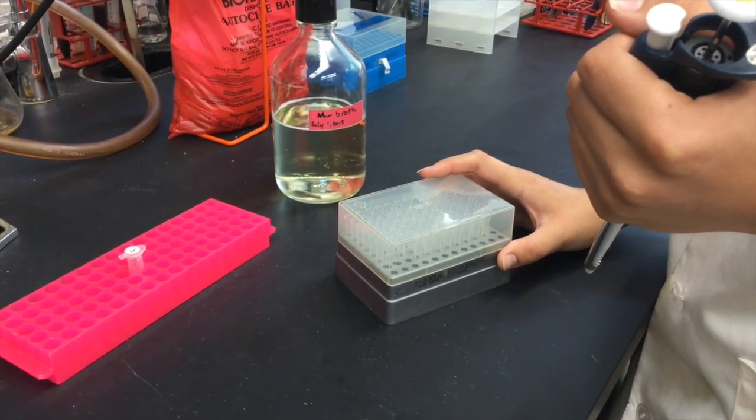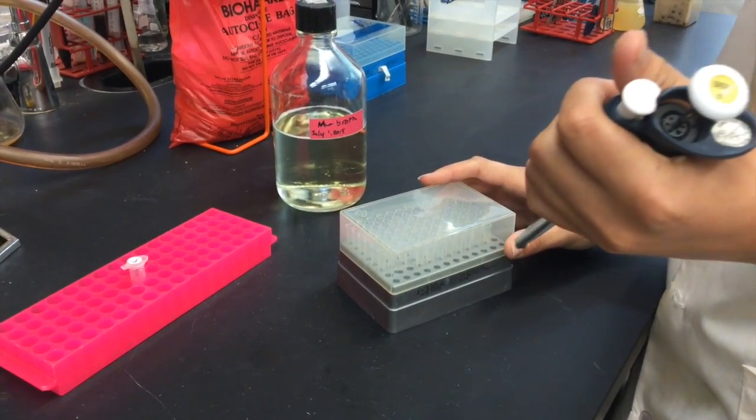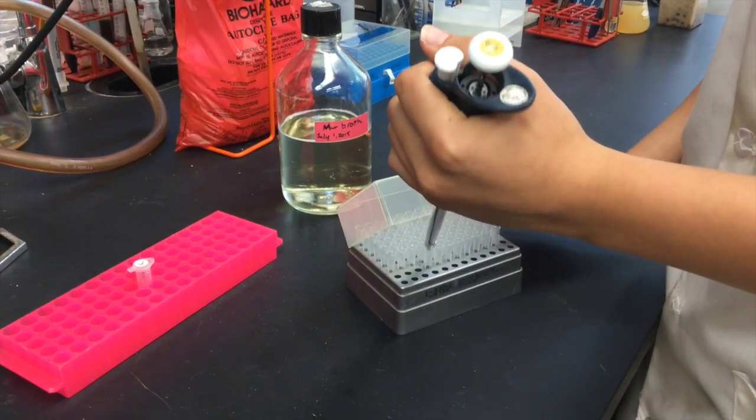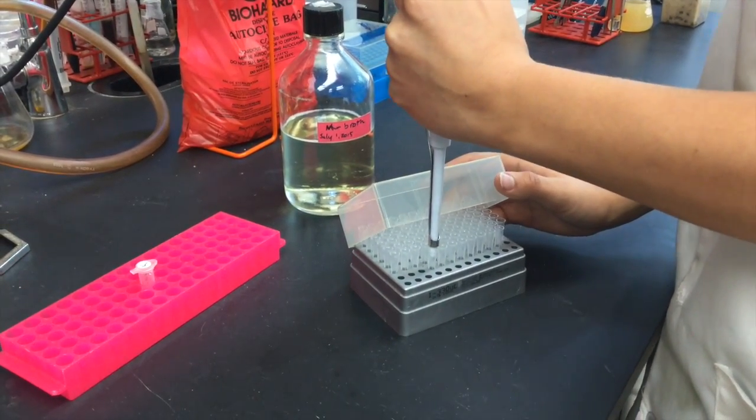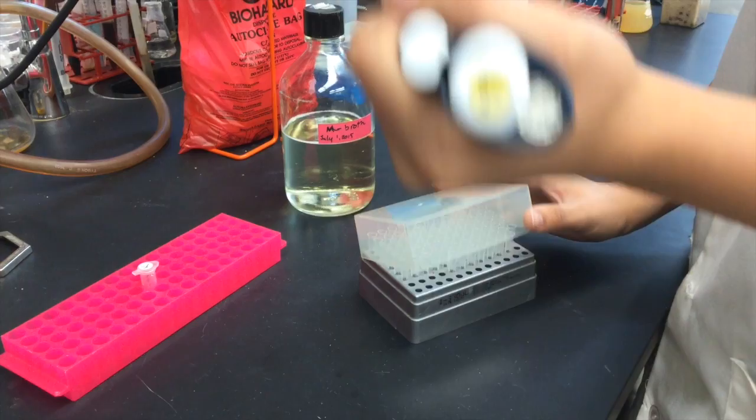Once you have reached the desired volume, you will need to place a tip on the discharge end of the pipetter. Open the lid just long enough to place a tip on the end of the pipetter and then close the lid.